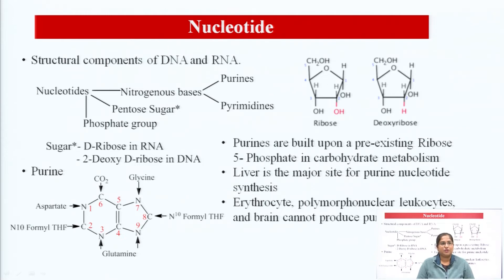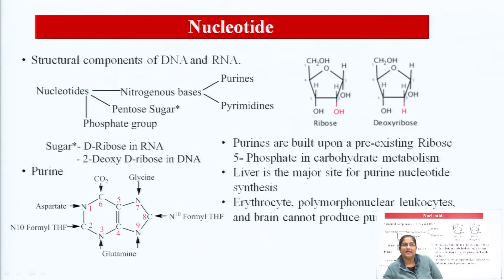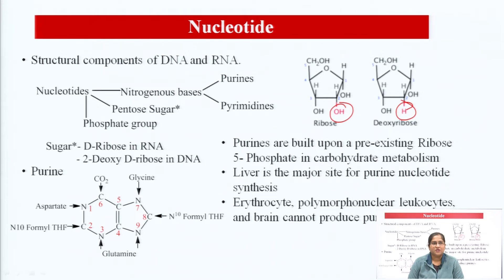The next component in a nucleotide is the pentose sugar and a phosphate group. We have two pentose sugars, which differ in ribose and deoxyribose nucleic acid. RNA has ribose sugar, whereas DNA has deoxyribose. The difference between them: in ribose sugar at the second position there is an OH group, whereas in deoxyribose we have a hydrogen present. This is the main difference between ribose and deoxyribose sugar.